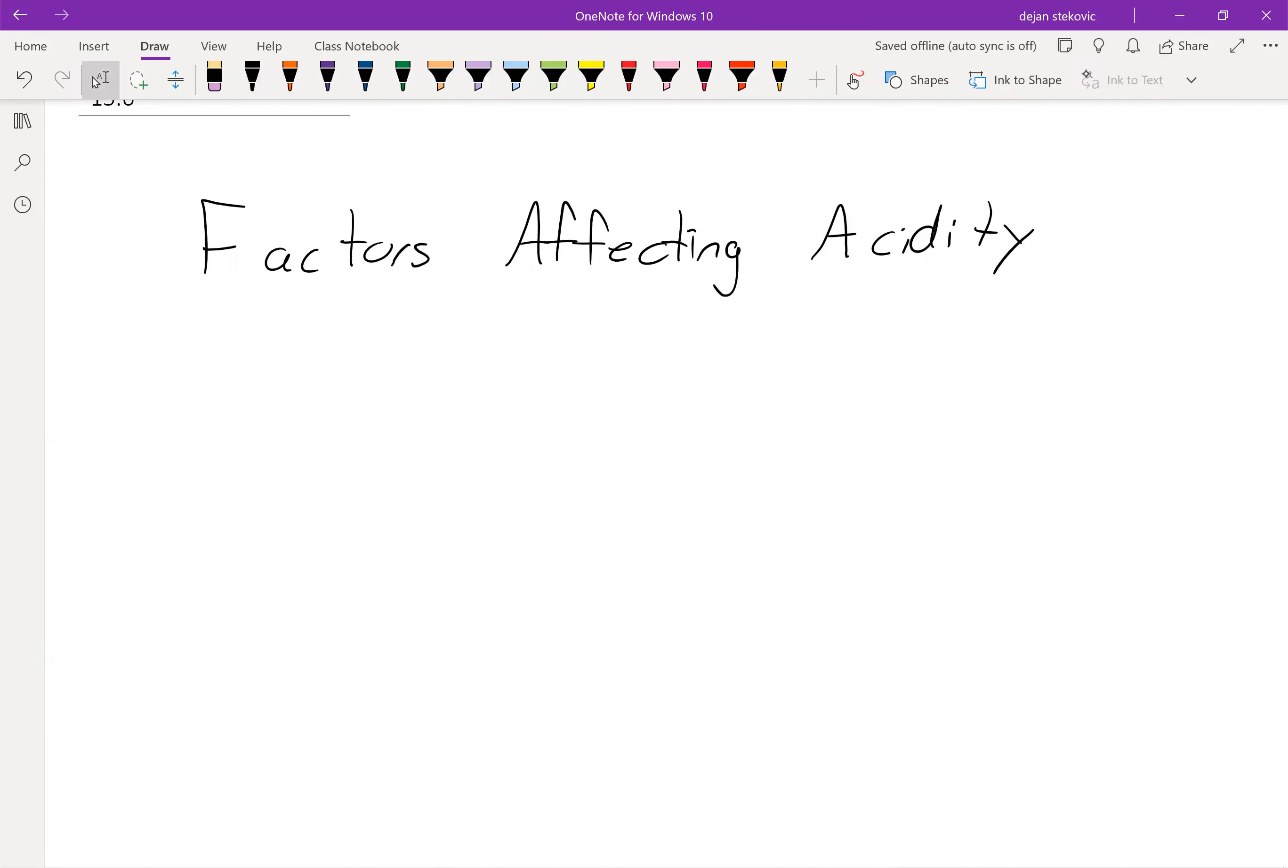So as we said, alcohols can act as acids, but different alcohols have different pKa's, different levels of acidity. And so we're going to take a look at some factors that affect how acidic or basic an alcohol is.